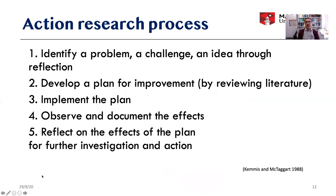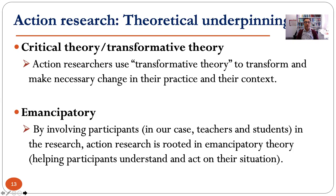So these are the processes for designing and implementing action research. It starts with identification of a problem, challenge, or idea through reflection, and then developing a plan for improvement by reading the literature — it's always a good idea to search the literature and see what other researchers have talked about this issue and what they have found. Based on that, we implement the plan, observe and document the effect by collecting appropriate data, reflect on the effects of the plan, and if needed, plan for further investigation and action. It's a very coherent, integrated cycle of planning and implementing action research.